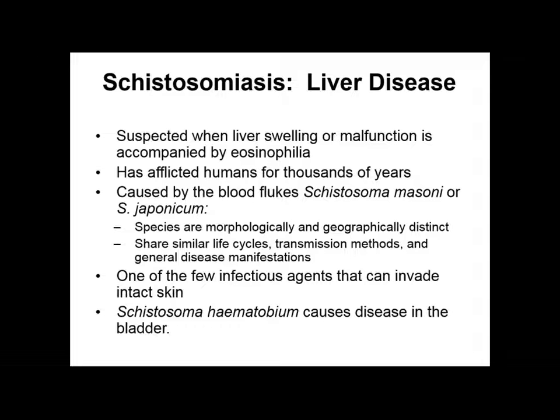A few infectious agents can invade the skin directly, and the schistosomiasis helminth is capable of doing that. Schistosoma haematobium is also capable of causing disease within the urinary bladder.